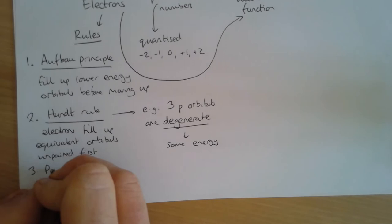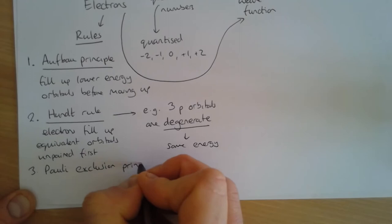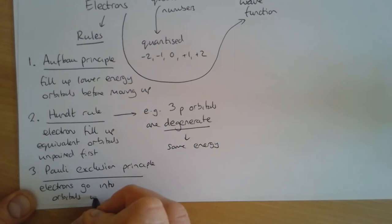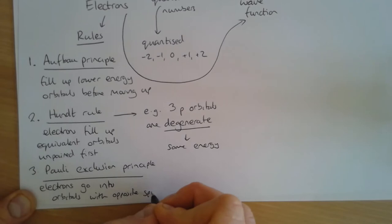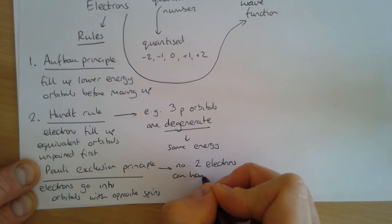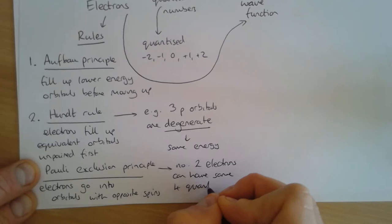The final rule is the Pauli exclusion principle. It means electrons go into orbitals with opposite spins. The reason it's called the exclusion principle is that it states no two electrons can have the same four quantum numbers.